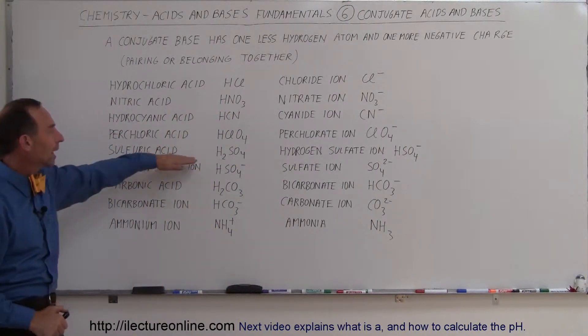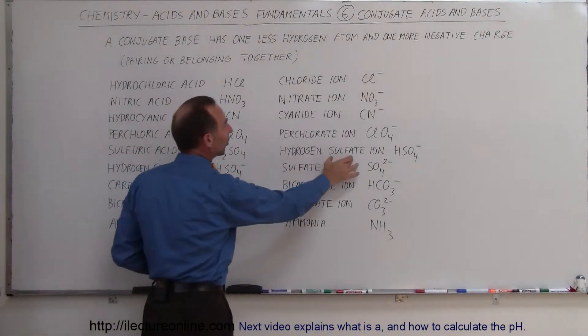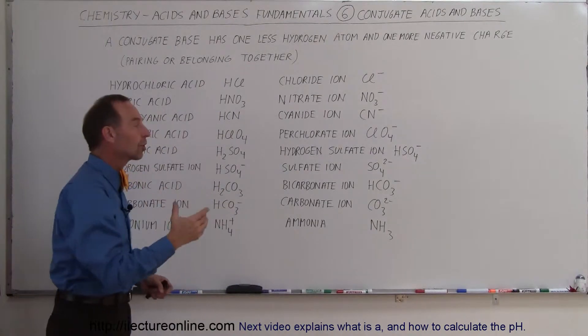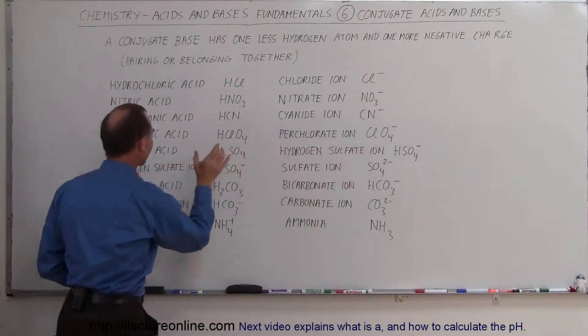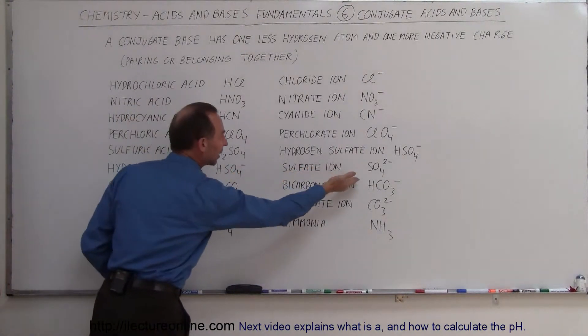Sulfuric acid, H2SO4, very famous acid. We take one hydrogen away, we now end up with hydrogen sulfate ion. Notice that this also can act as an acid. Even though it's a conjugate base of sulfuric acid, it can also act like an acid in itself because it can also give away the second hydrogen atom and become the sulfate ion.